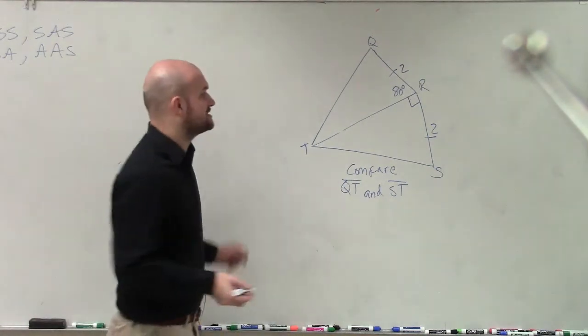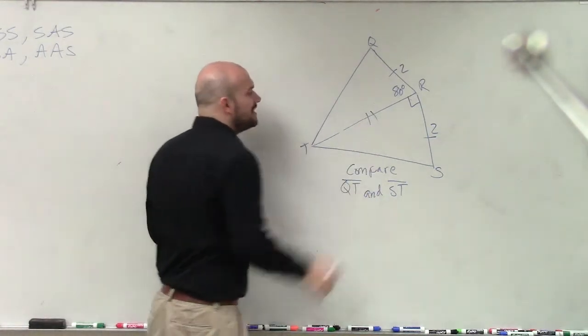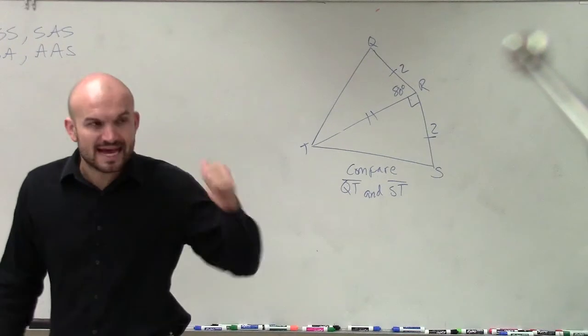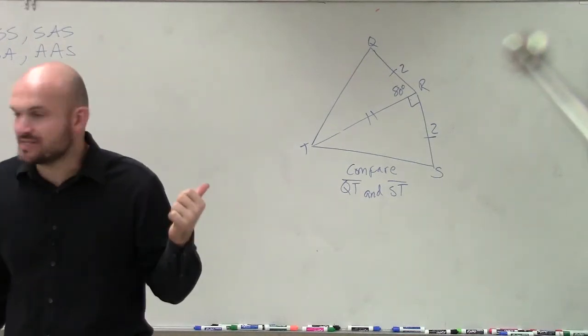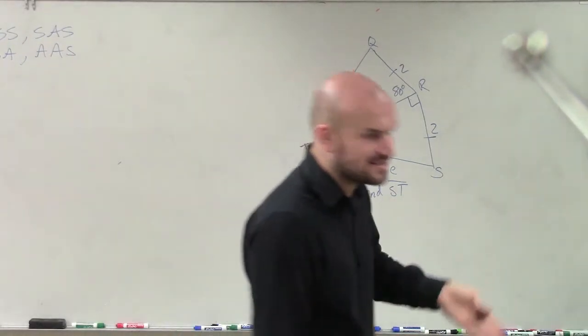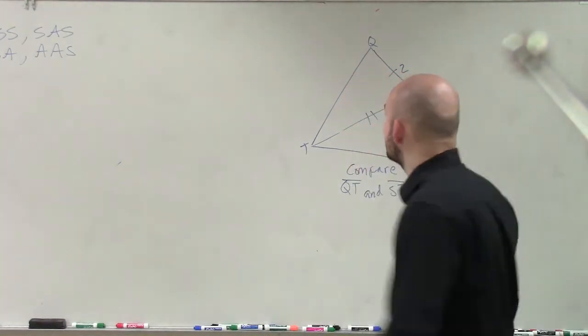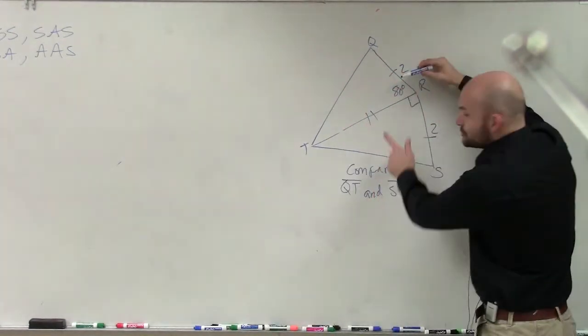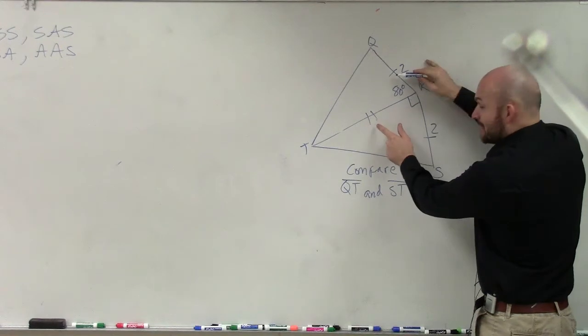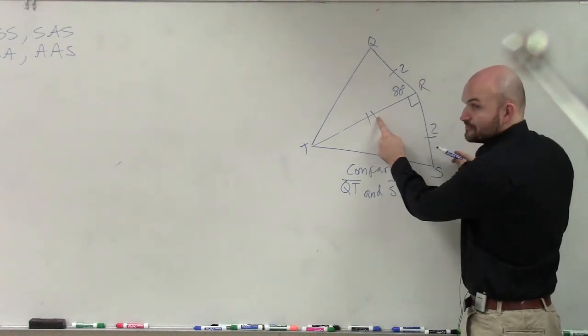Now, the other thing, Kevin, which is nice is we know that that side is equal to that side because they are obviously reflexive, and it's the same side for both triangles. So now we have two sides that are congruent to another two sides of the other triangle.